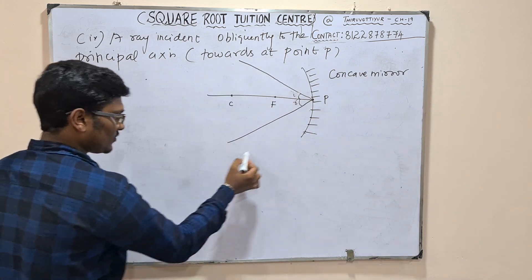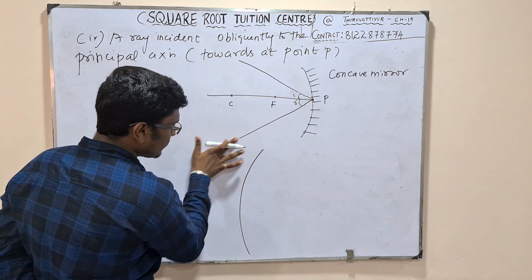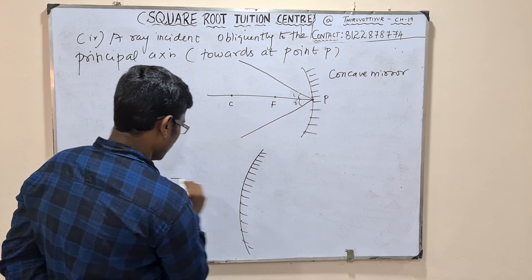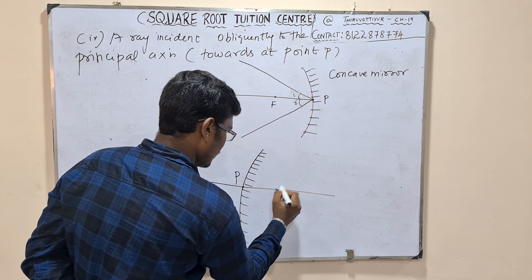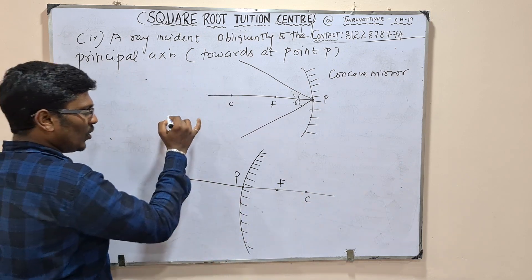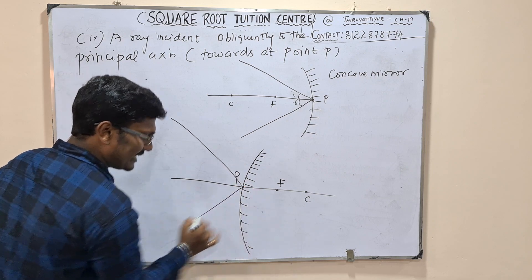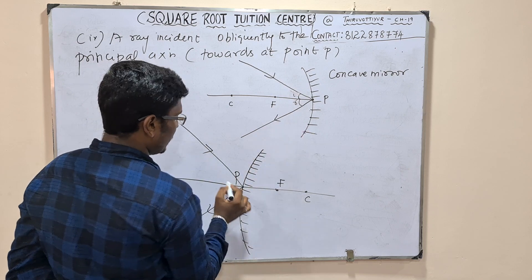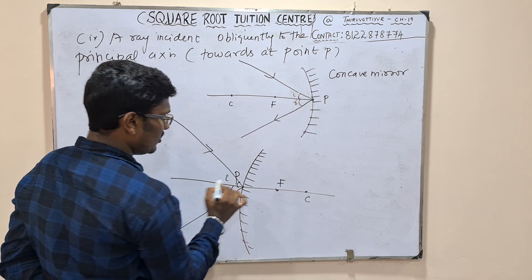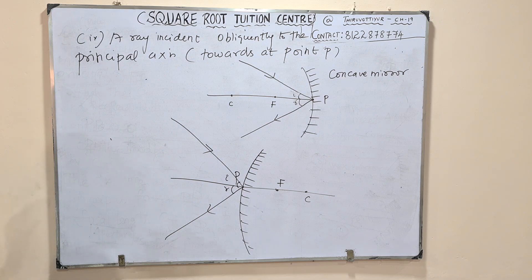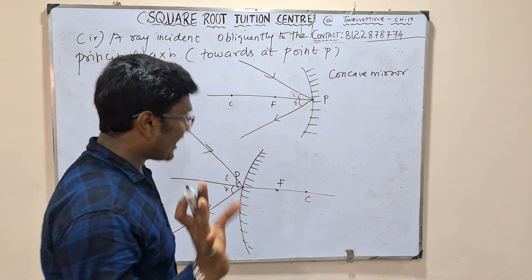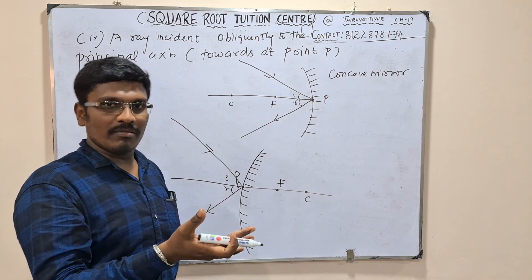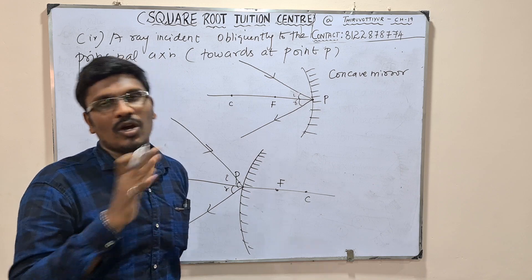These are the rules for ray diagrams. Next, we move on to image formation by convex mirror and image formation by concave mirror.